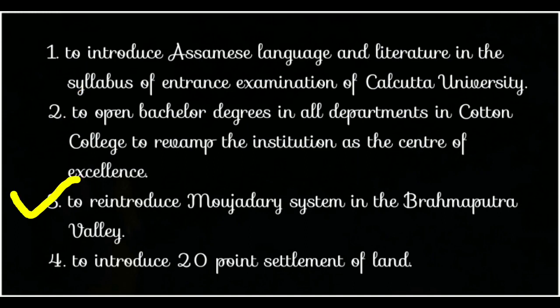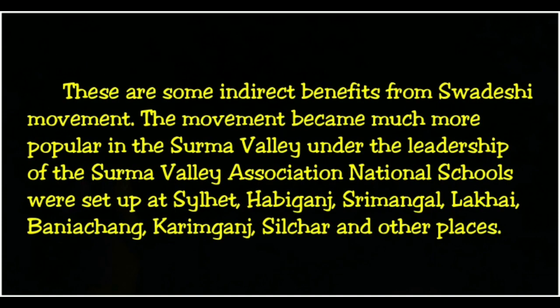The British welfare activities included: revamping all departments in Cotton College as a center of excellence, reintroducing the Mouzadari system in the Brahmaputra Valley, and introducing a 20-point settlement of land. These are considered some indirect benefits arising from the Swadeshi movement.